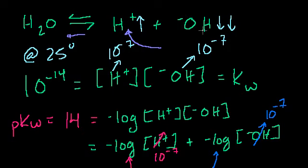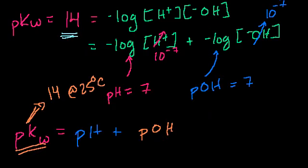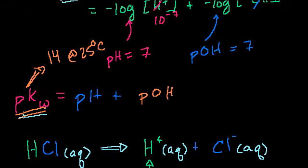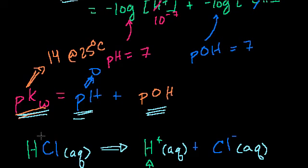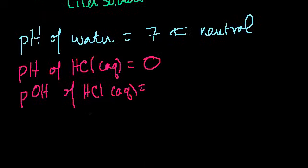What ends up being the concentration of OH-? We know pKw is 14 at 25°C, and pKw equals pH plus pOH. So if the pH for one molar hydrochloric acid is 0, then the pOH of one molar hydrochloric acid is 14.